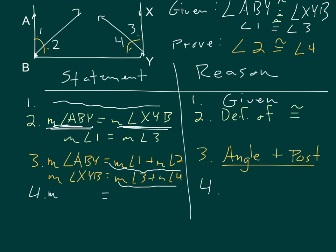So what I would say now is the measure of angle 1 plus the measure of angle 2 is equal to the measure of angle 3 plus the measure of angle 4.